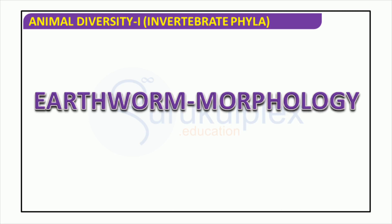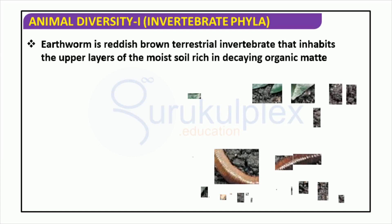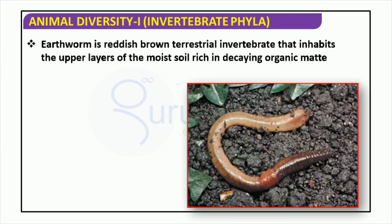It feeds on organic matter in the soil and plays an important role in soil aeration and fertilization. Earthworms are an important example of invertebrates — animals without a backbone. Across the world, these creatures can be found in soil of varying climates, and can often be seen wriggling on the surface after a rainstorm or burrowing through the earth. Not only are they visually interesting, but they are also beneficial for the health of the soil. Earthworms can help to aerate the soil, as well as enrich it, and can even speed up the process of decomposition.